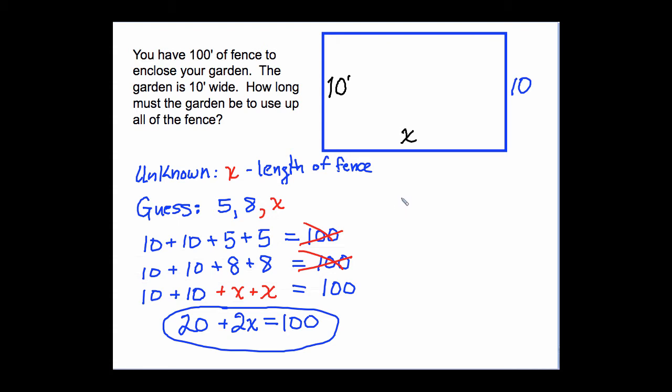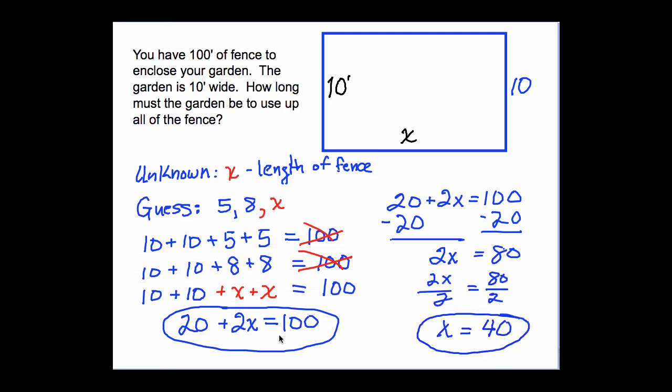Now, let's go and solve it. And there's our solution. x equals 40. Let's just check to see whether that's correct. 10 plus 10 is 20, plus 40 is 60, plus another 40 would be 100, so this solution is correct.